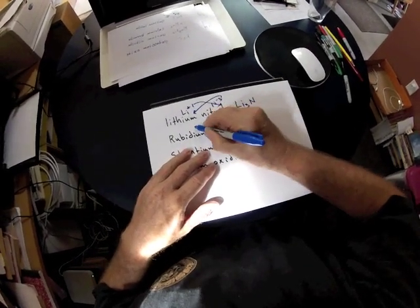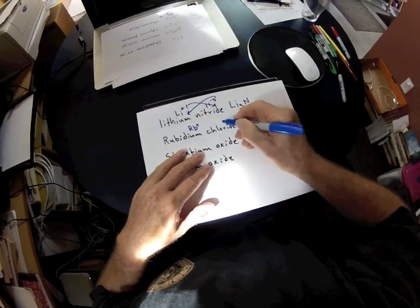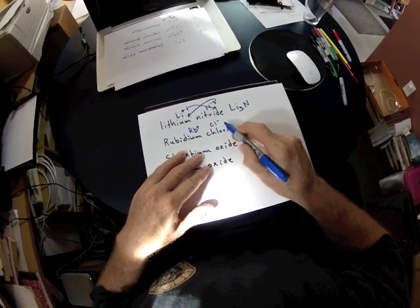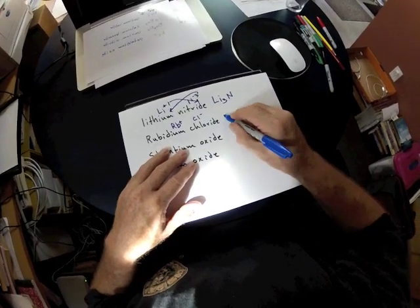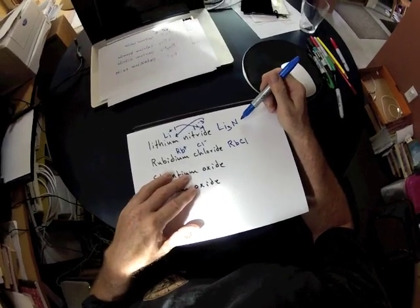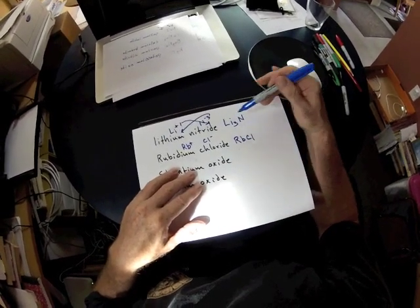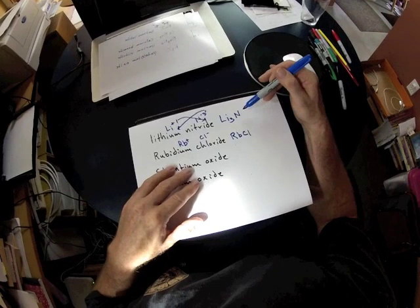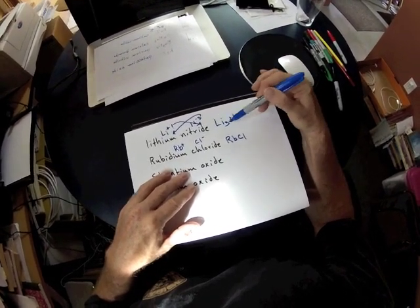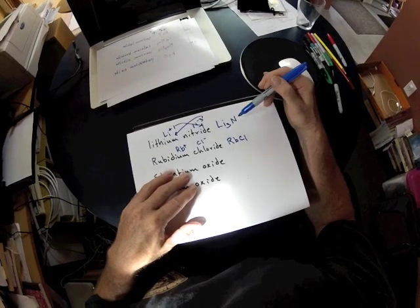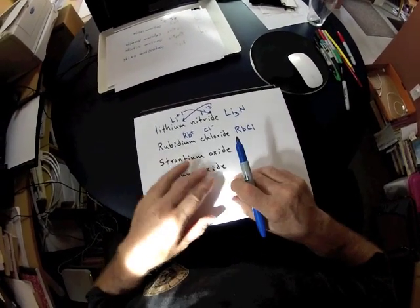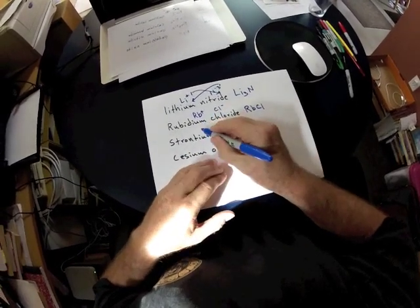The next one down is rubidium ion, and it's being mated up with chloride. We see that the magnitude of the charges is equal but opposite, so they combine directly. Remember, the rule of thumb for making an ionic compound is that the sum of all the charges must equal zero. The formula that we end up writing down needs to be uncharged. So when we combine these ions, they have to sum to zero.